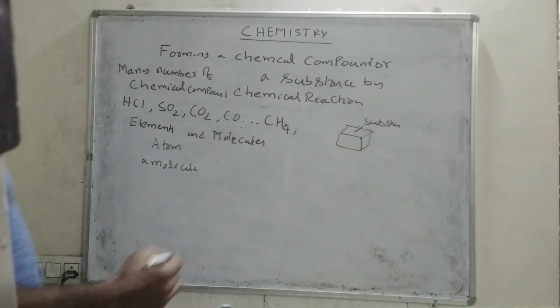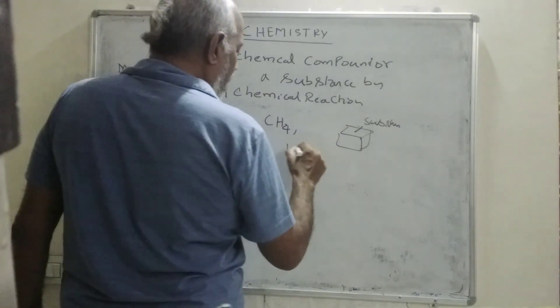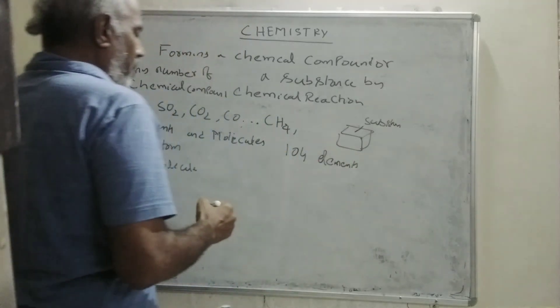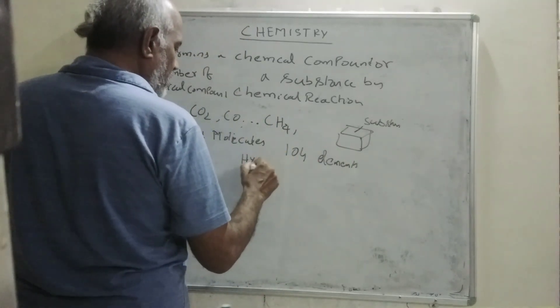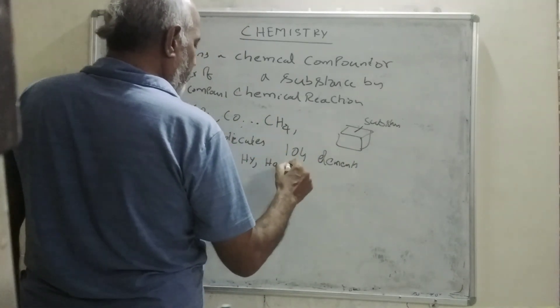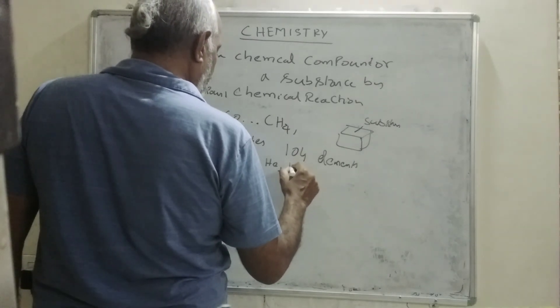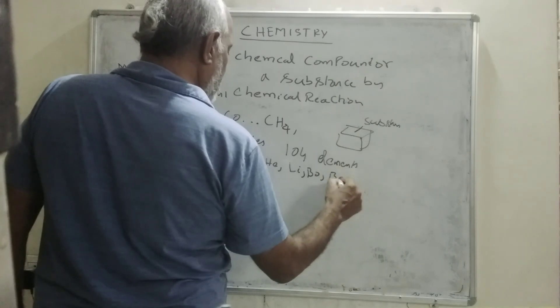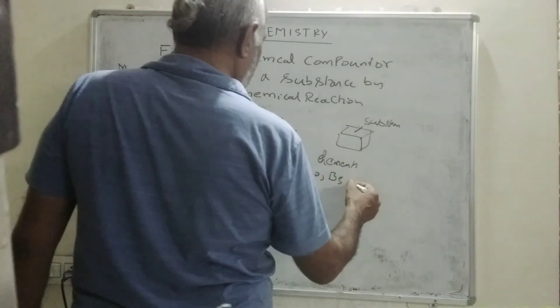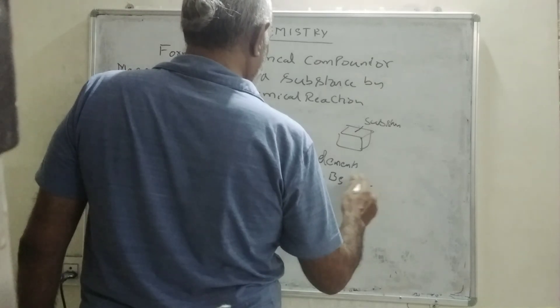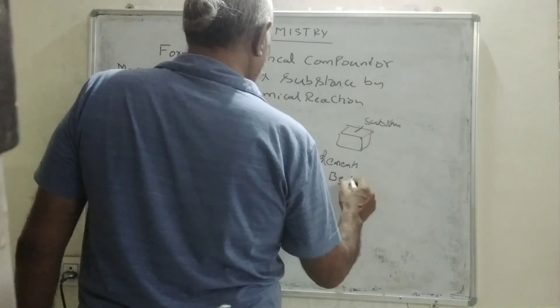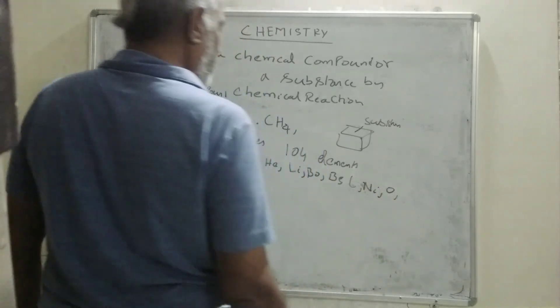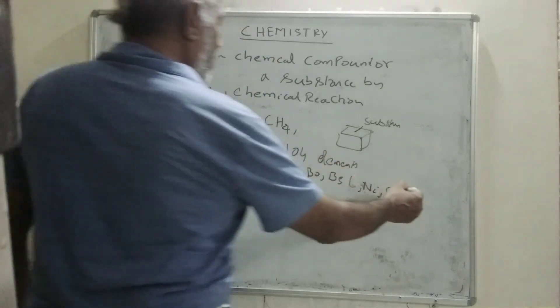In chemistry, we have nearly 104 elements. Few of them are hydrogen, helium, lithium, boron, beryllium, carbon, nitrogen, oxygen, things like this. It will keep on going up to 104 elements.